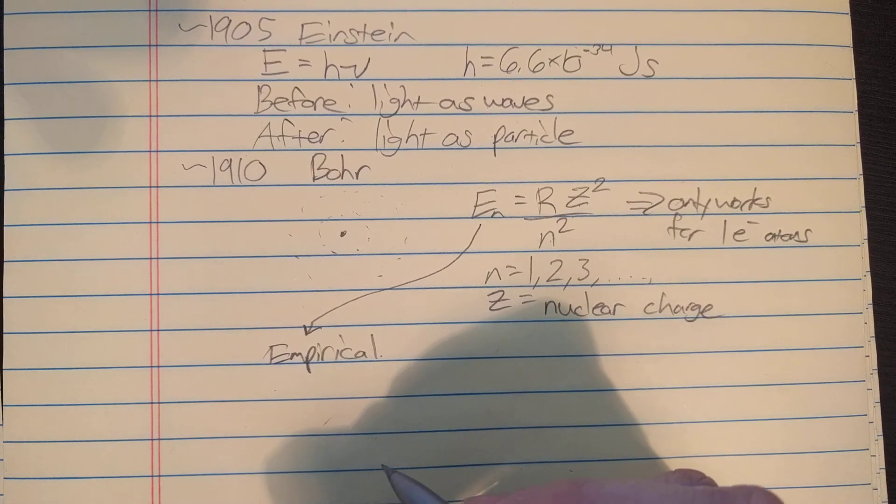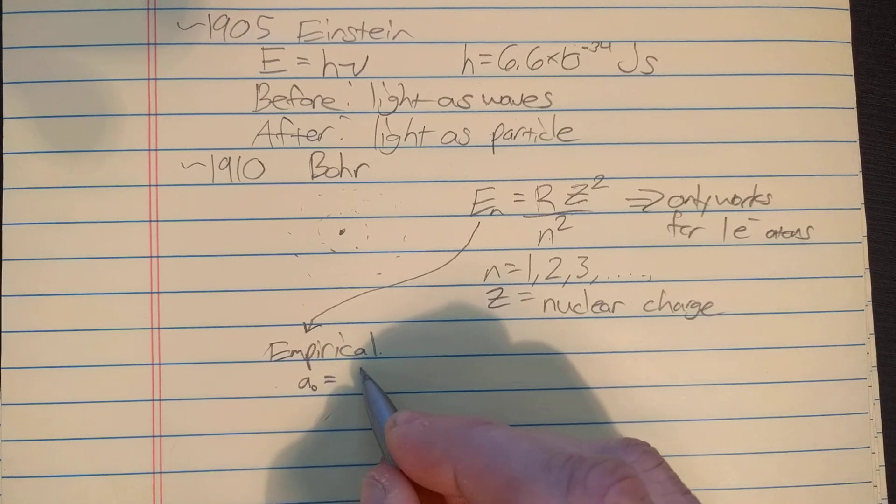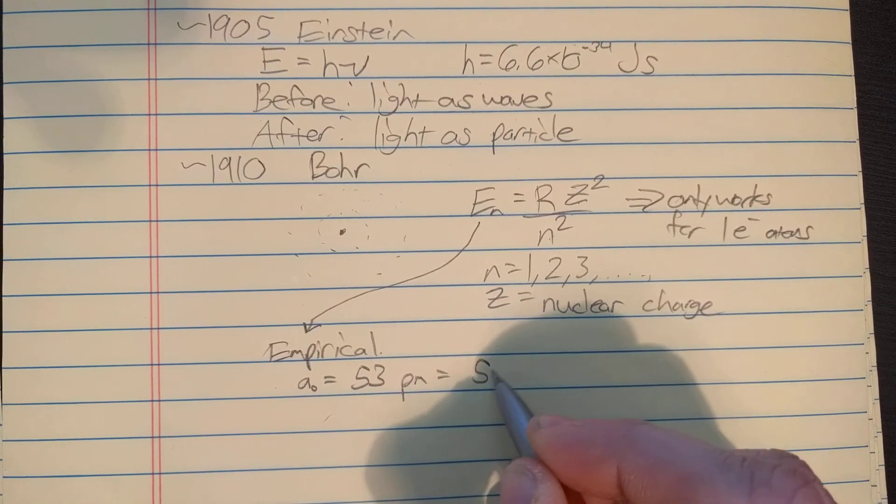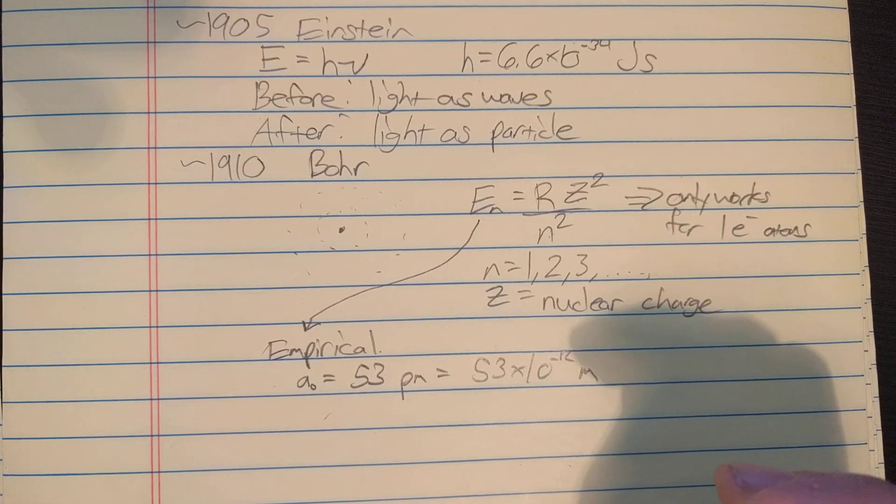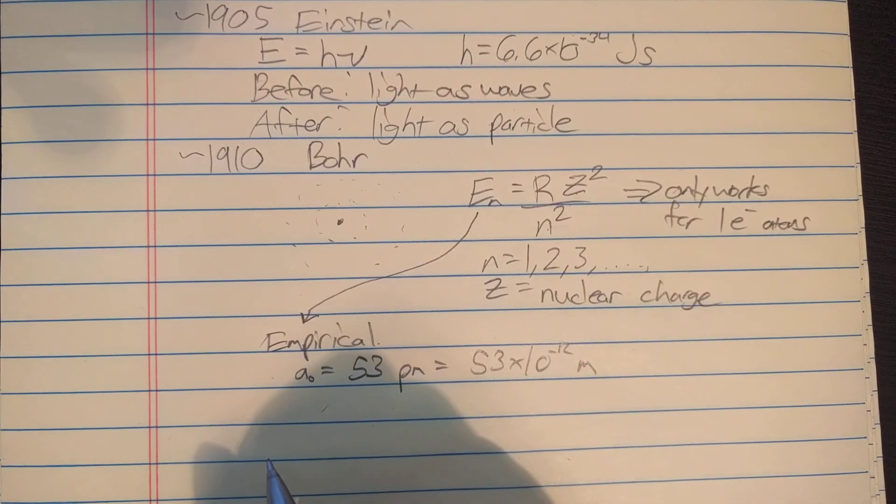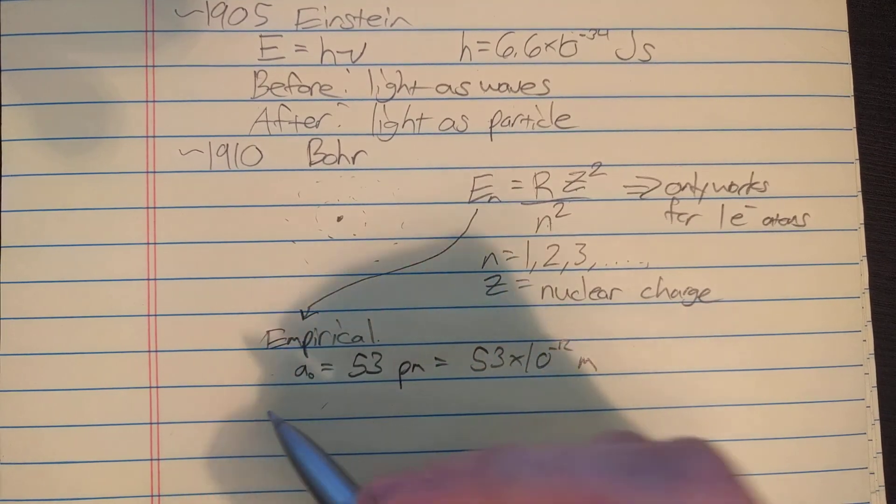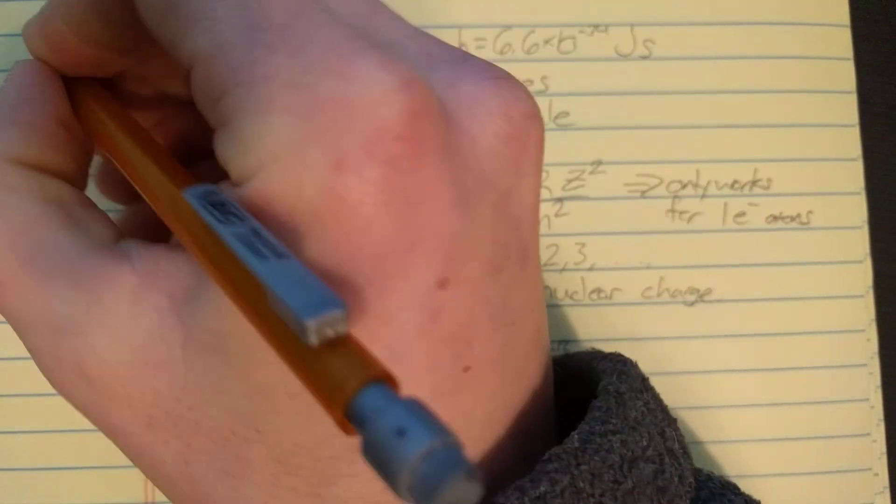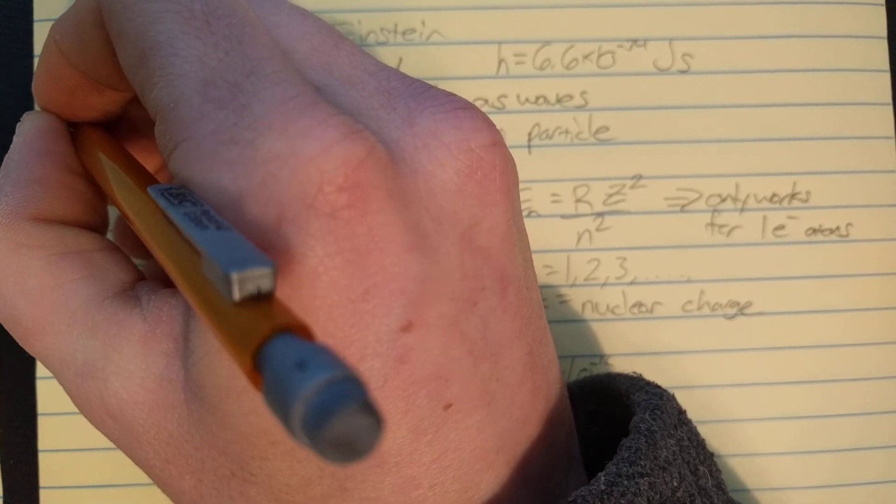He also calculated the radius of the hydrogen atom, which is now called the Bohr radius. It's 53 picometers or 53 times 10 to the negative 12 meters, so very small. That was up to 1910. All these guys together developed what some people refer to as the old quantum theory.